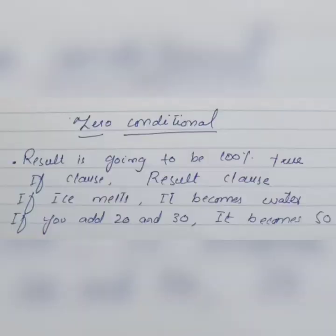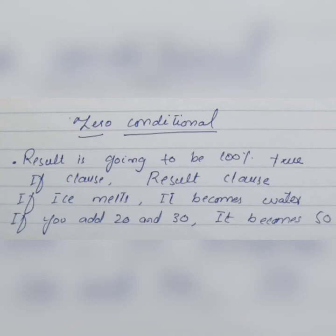For zero conditional, we talk about situations where you are 100% sure that if the condition is fulfilled, the result is going to be true — no exceptions. This mostly happens in scientific reactions. For example: 'If ice melts, it becomes water' — this always happens. Another example: 'If you add 20 and 30, it becomes 50.' The result is always 100% true. The formula for zero conditional is: if clause in present simple, and main clause in present simple.